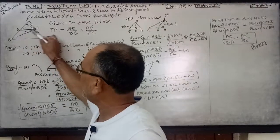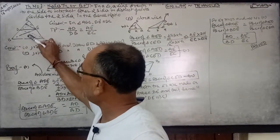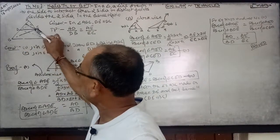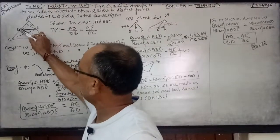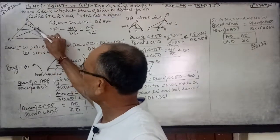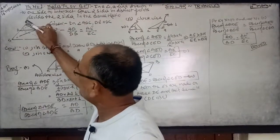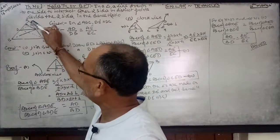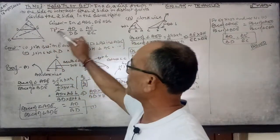a line parallel to one side intersects other two sides in distinct points. These distinct points are D and E, divides the two sides in the same ratio. Means AD over DB equals AE over EC.